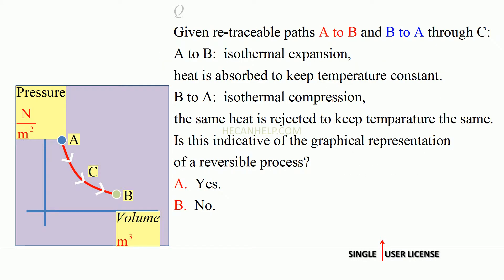Given retraceable paths A to B and B to A through point C: A to B is isothermal expansion. As you can see, volume is increasing, so it is an isothermal expansion. Heat is absorbed to keep temperature constant.